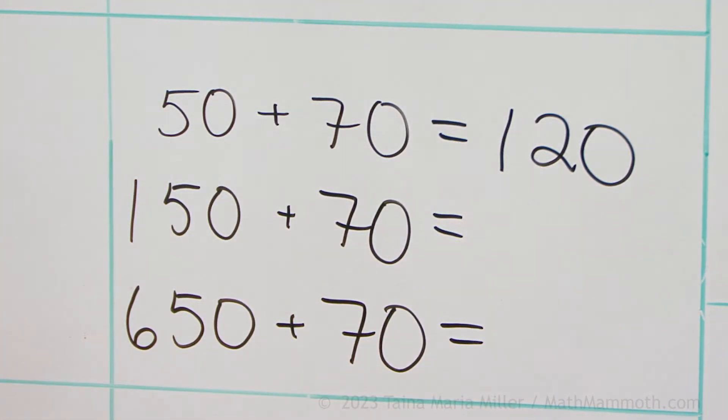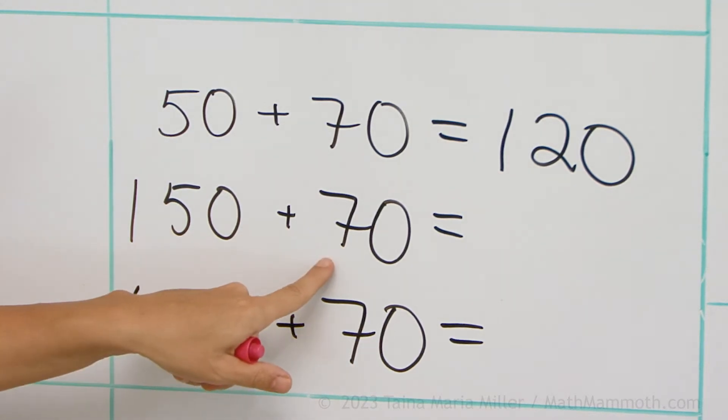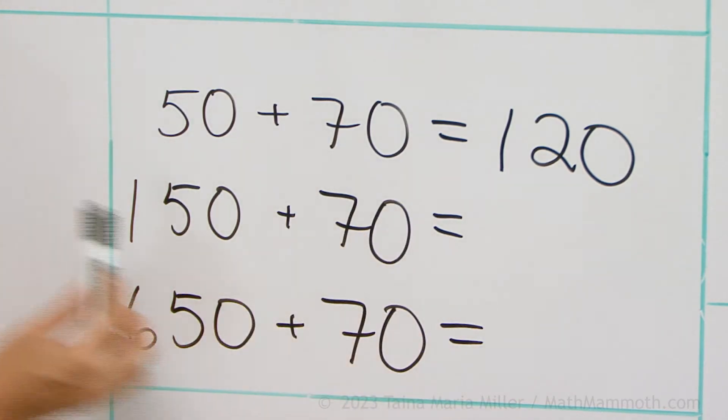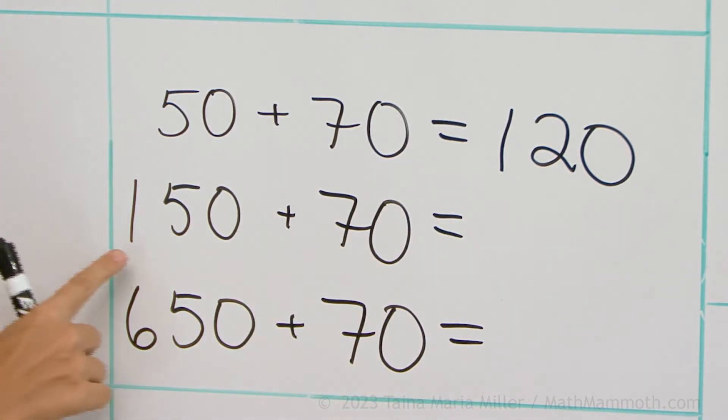And now we can use that to help us figure out these two. 150 and 70. The 50 and 70 here makes 120, and then there is 100. So the total will be 220.